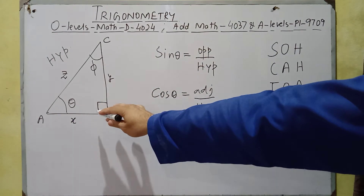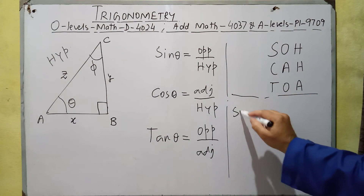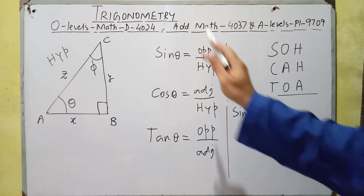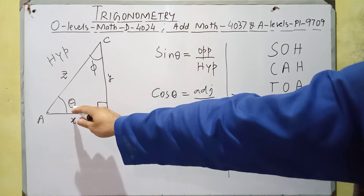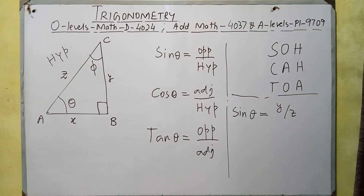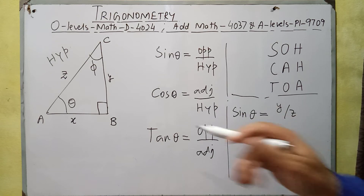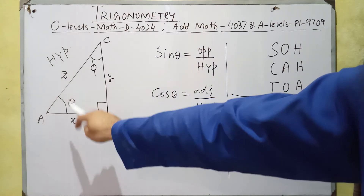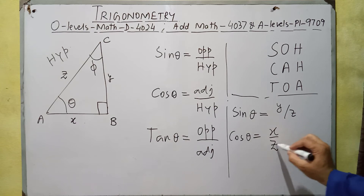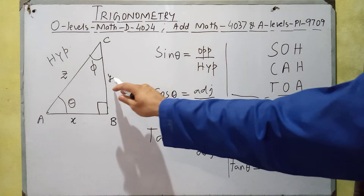In this triangle, if we want to find sin theta, we use the rule that sin theta equals opposite over hypotenuse. For angle theta, the opposite side is Y and the hypotenuse is Z, so sin theta equals Y over Z. Similarly, cos theta equals adjacent over hypotenuse, which is X over Z. And tangent theta equals opposite over adjacent, which is Y over X.